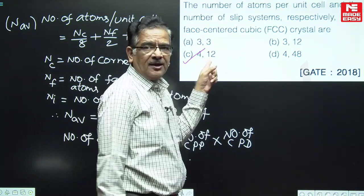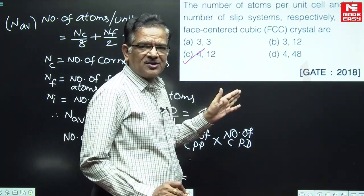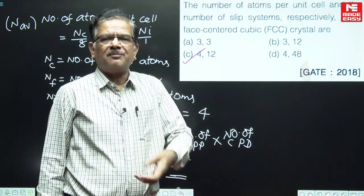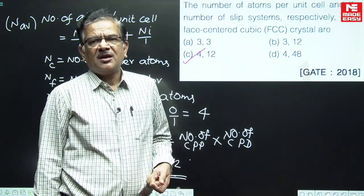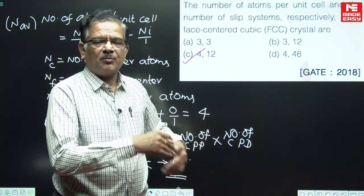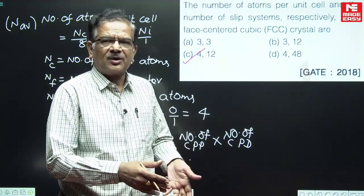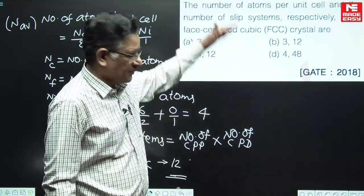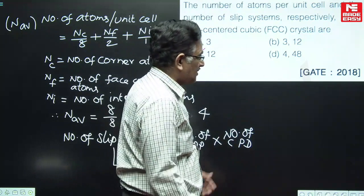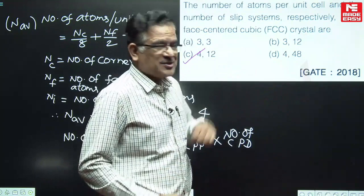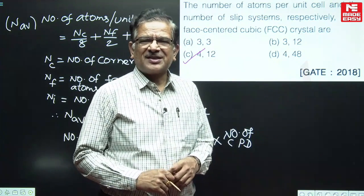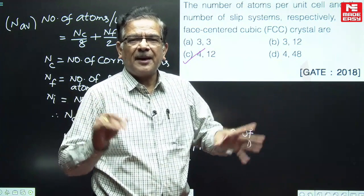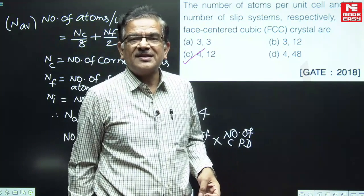Therefore, the correct answer is given by choice C: 4 and 12. This is in the very first chapter on basics of crystallography that we are going to practice and make all these calculations, making students comfortable with this type of calculation in examinations. When exactly the same questions appear in examinations, our students will be very happy and will be able to do it very easily.